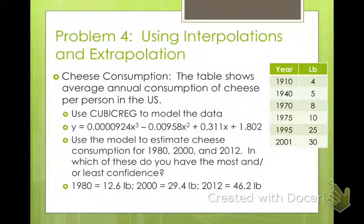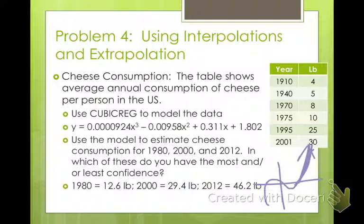If we want to think about what shape this makes, you can graph it and see what happens. Do you think all three of these values are within reason? Looking at 1975 to 1995, 12.6 would be a pretty good estimation. For 2000, 29.4 is a very good estimation. But in 2012, we'd be at about 1.5 times 30. When you graph it, the cubic is going to shoot up at a pretty dramatic rate. So I would say that 46.2 pounds is probably not the best value for cheese consumption in 2012.